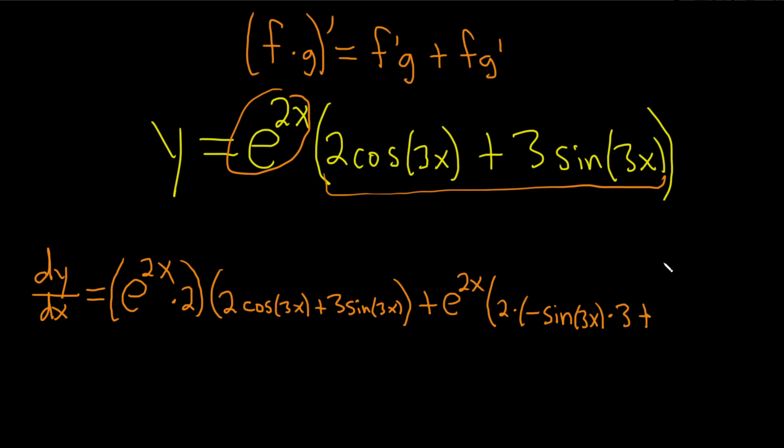Plus the 3 hangs out. Derivative of sine is cosine. So cosine of 3x times the derivative of the inside. The derivative of 3x is 3.